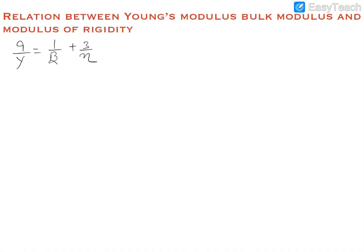Hello guys, welcome to Tesla Adventures. In this video we'll discuss the relationship between Young's modulus, bulk modulus, and modulus of rigidity. We have already discussed in previous videos that gamma equals 2 eta into (1 plus sigma), and gamma equals 3 beta into (1 minus 2 sigma).